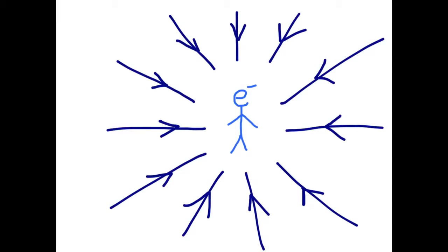So a negative charge is going to have its own field. We call it an electric field, which is kind of similar to a gravitational field, except it doesn't interact with mass, but it interacts with electric charge.